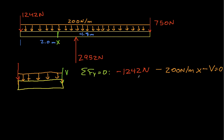And from this, we can then solve for v, and that'll be a function of x. v(x) is minus 1242 newtons, minus 200 newtons per meter, times x.